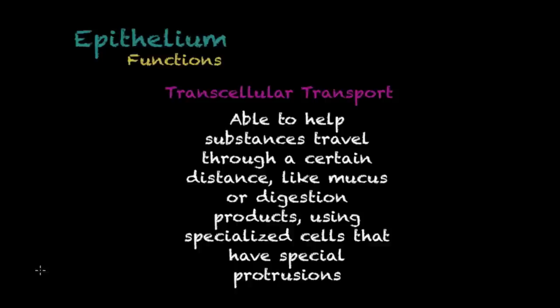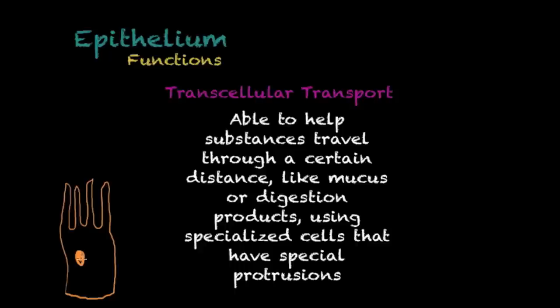One of the great functions of the epithelium is transcellular transport. This tissue has cells that are quite specialized for this. These epithelial cells have protrusions — extensions, for lack of a better word. They have a nucleus and everything like a normal cell, but they also have these extensions that are able to transport or carry materials across a certain distance. These protrusions are usually able to move and carry things like mucus and digestion products throughout a necessary distance.